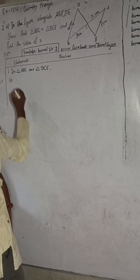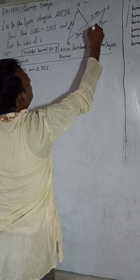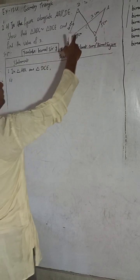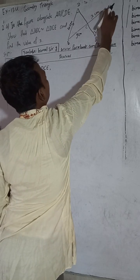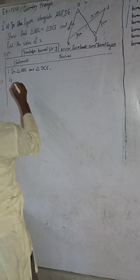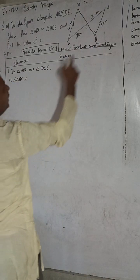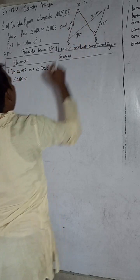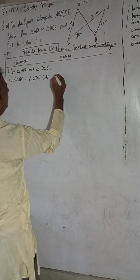Reason number 1: This angle is equal to this angle because AB is parallel to DE. So angle ABC is equal to angle CDE. The reason is: AB parallel to DE and alternate angles — alternate angles are equal.